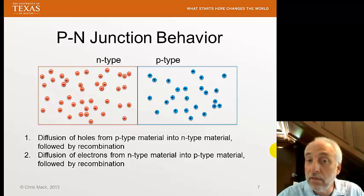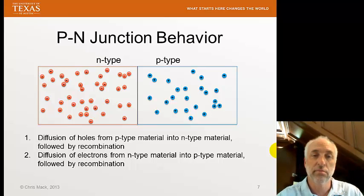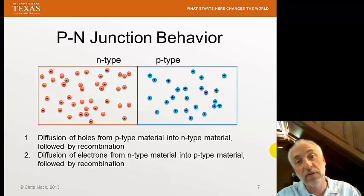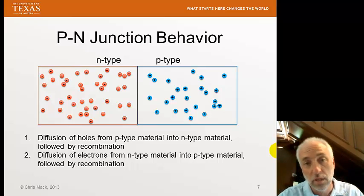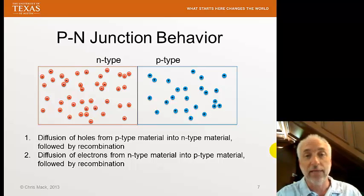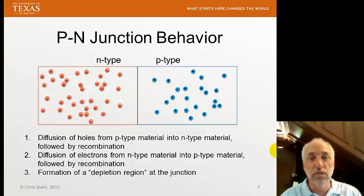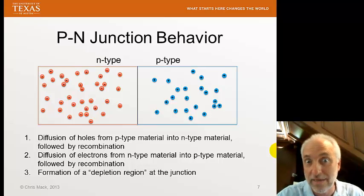We've got a high concentration of P-type material on one side and a high concentration of N-type material on the other. That concentration gradient will drive diffusion. The lots of holes in the P-type region will begin to diffuse across into the N-type material. If a hole diffuses into the N-type material, it's surrounded by an excess of electrons — it will find an electron and recombine. Likewise, electrons in the N-type region diffuse into the P-type region, where they quickly find a hole and recombine.